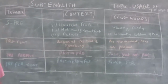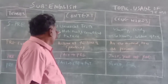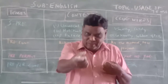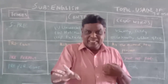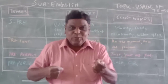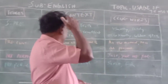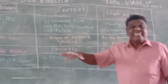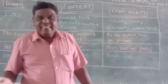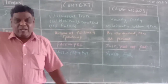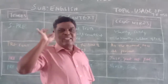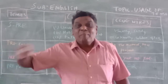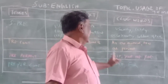Then present continuous tense. The context is: action at the time of speaking. I am taking the class and you are listening. The action going on at present — I am teaching, you are listening. Number two context: a current trend or something happening nowadays. Nowadays we are taking YouTube classes — it has become common. That also uses present continuous.